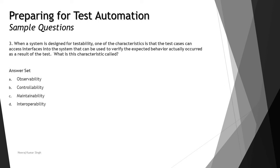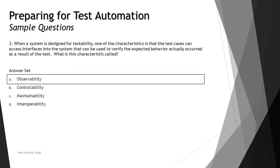Question number three — sometimes you can be expected with straightforward definitions. When a system is designed for testability, one characteristic is that test cases can access interfaces into the system that can be used to verify that the expected behavior actually occurred as a result of the test. What is this characteristic called? The right answer is A — observability — which relates to being able to observe the testability of the system. Controllability is about controlling the actions of the system under test, whereas options C and D are non-functional quality characteristics and do not deal with functional parameters.